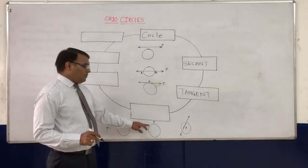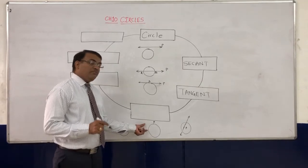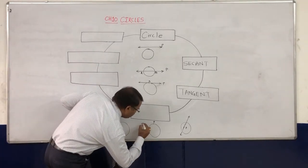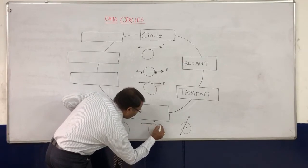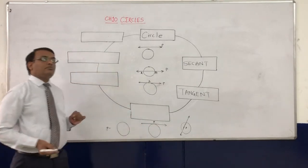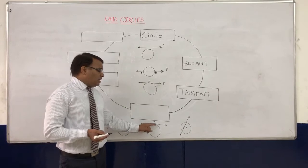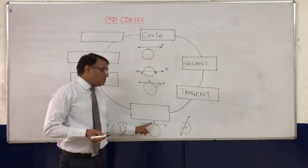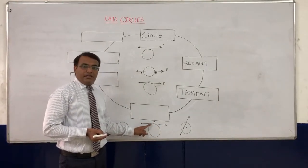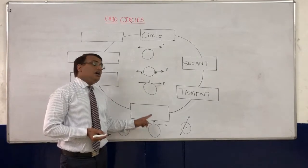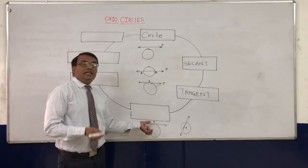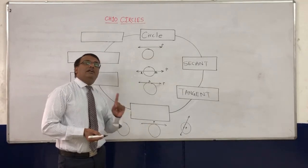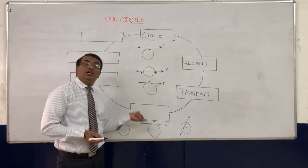If we talk about a point which is on the circle and we draw a line, you can see that the common point between the line and the circle is only one — that is point B. So whenever a point is on the circle, that point will have only one tangent.